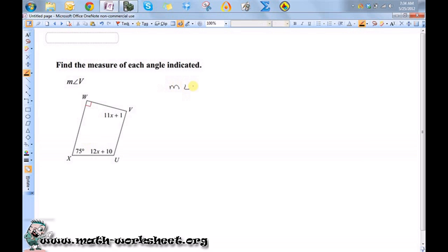So the measure of angle W plus the measure of angle V plus the measure of angle U plus the measure of angle X should all add up to 360 degrees. Now if you don't know that fact you can always use the formula S is equal to 180 times N minus 2 where S is the sum and N is the number of sides.